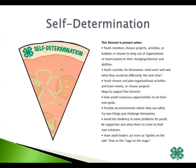Here's some ways that you can support self-determination: give youth numerous opportunities to set their own goals; provide an environment where they can safely try new things and challenge themselves; avoid the tendency to solve problems for youth — be supportive and allow them to come to their own solutions; and have adult leaders act more as guides on the side rather than sage on the stage.